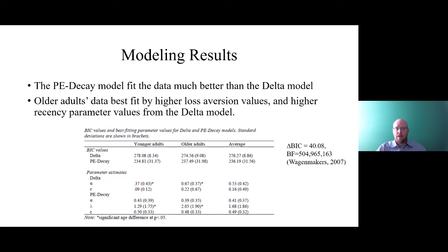Older adults' data were best fit by higher loss aversion parameters compared to younger adults, indicating greater sensitivity to the frequency of losses — consistent with other work we've done. For the delta model, older adults' data were best fit by higher recency parameters, suggesting greater sensitivity to recent events compared to younger adults.